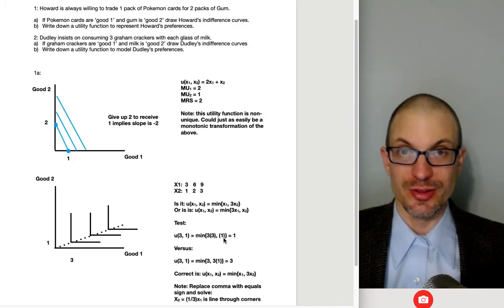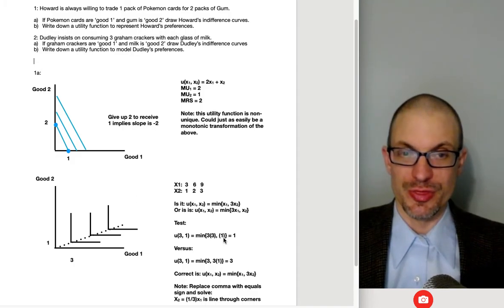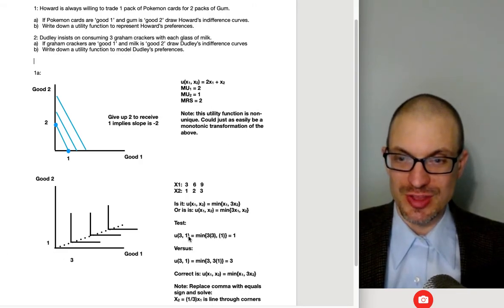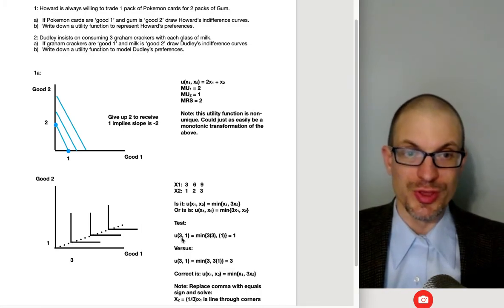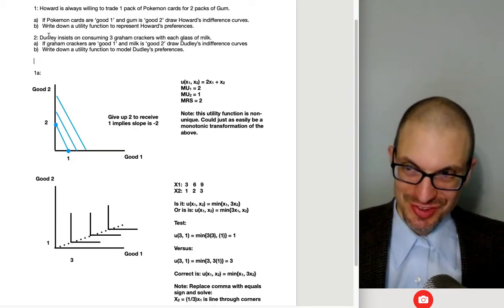Here, we've expended more resources on graham crackers than is contributing to our utility because we need a lot of glasses of milk to make up for it. And notice what's happened, though. We actually have a problem, which is like with fixed proportion utility, we would expect that in order to get better off, you have to have more of both. Both and more of both in the same fixed proportion. What happens if this is the utility representation and we give Dudley one more glass of milk? Now Dudley's utility goes from, Dudley's utility would go from one to two. What if we give a third glass of milk? Now it's going from one to two to three.